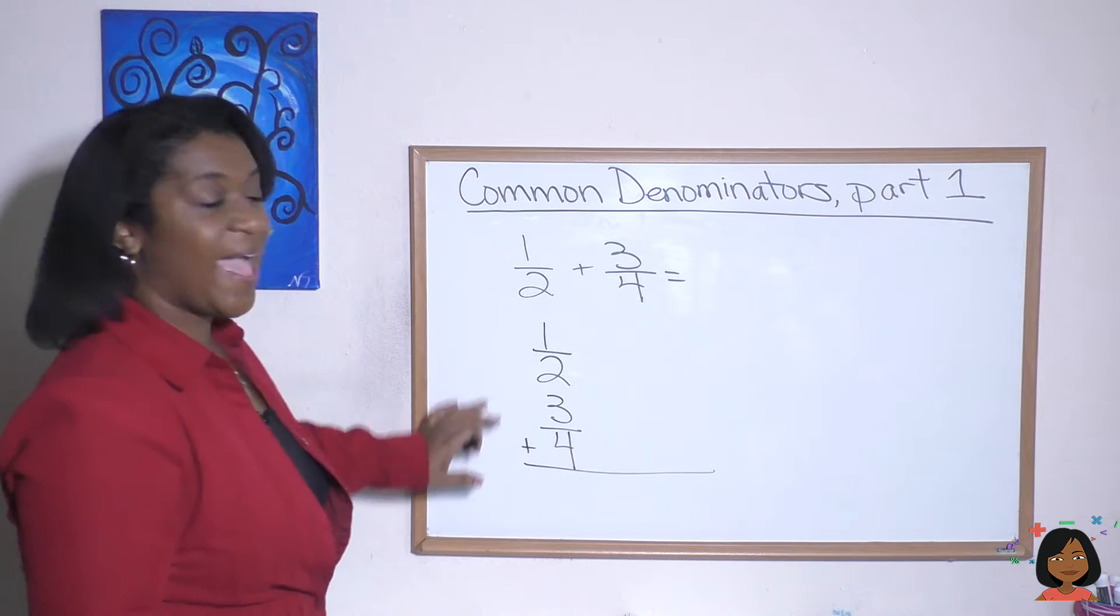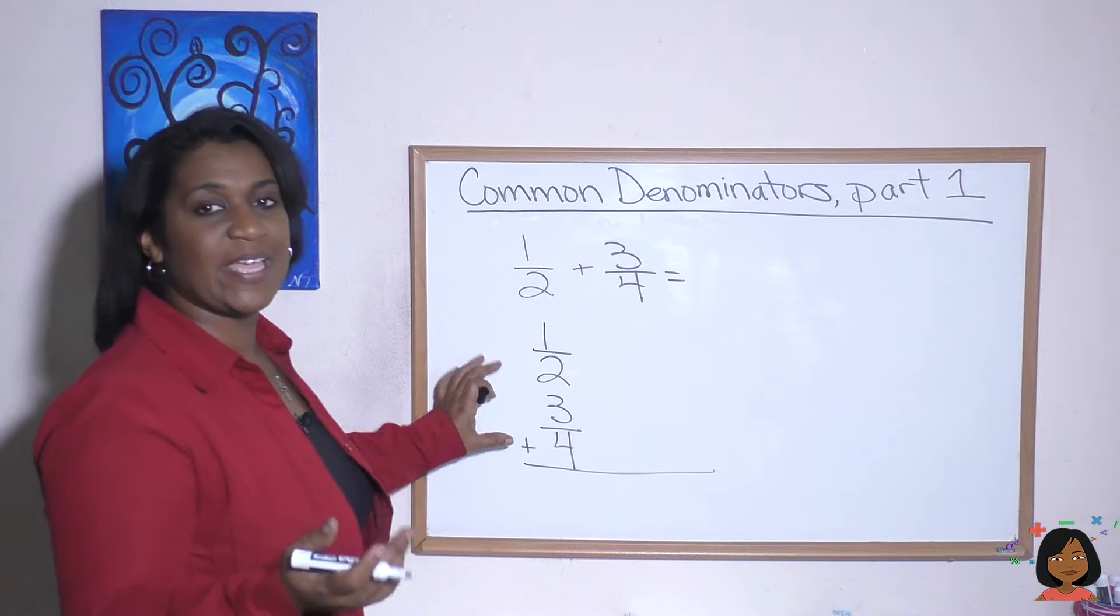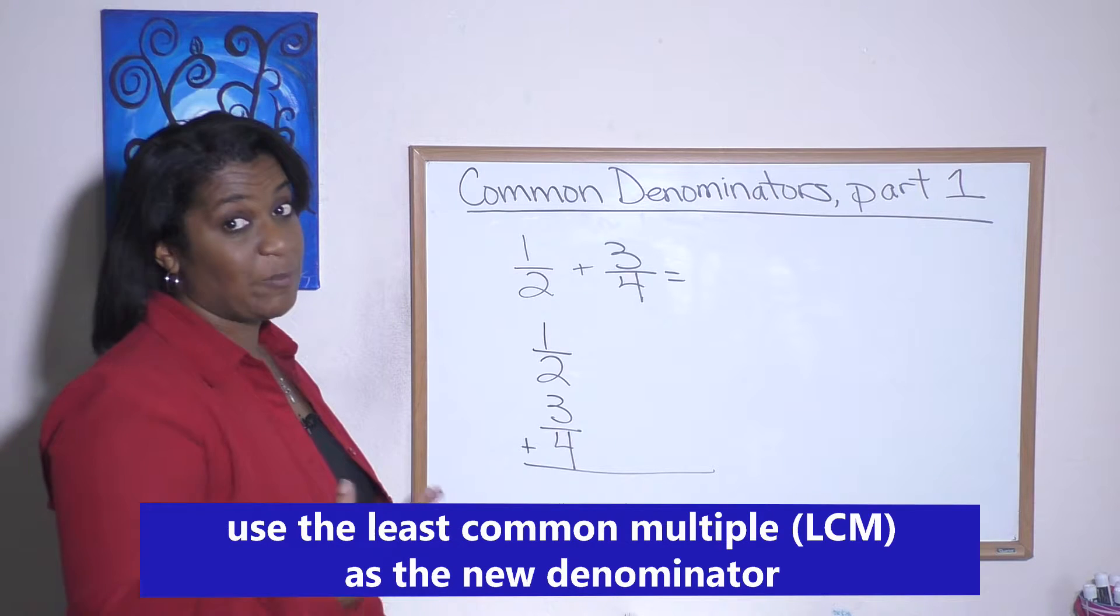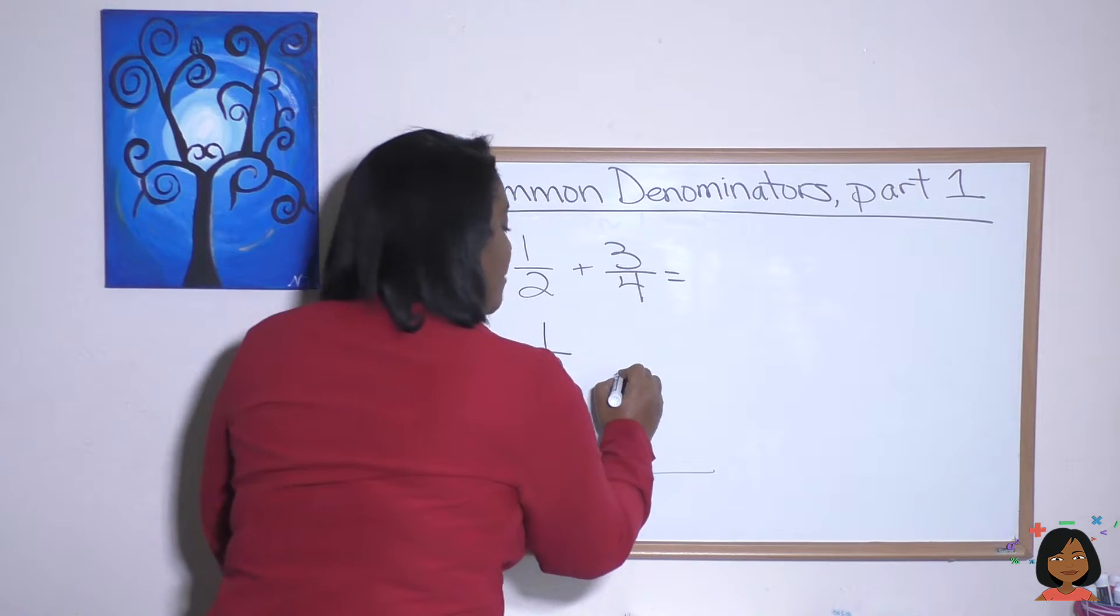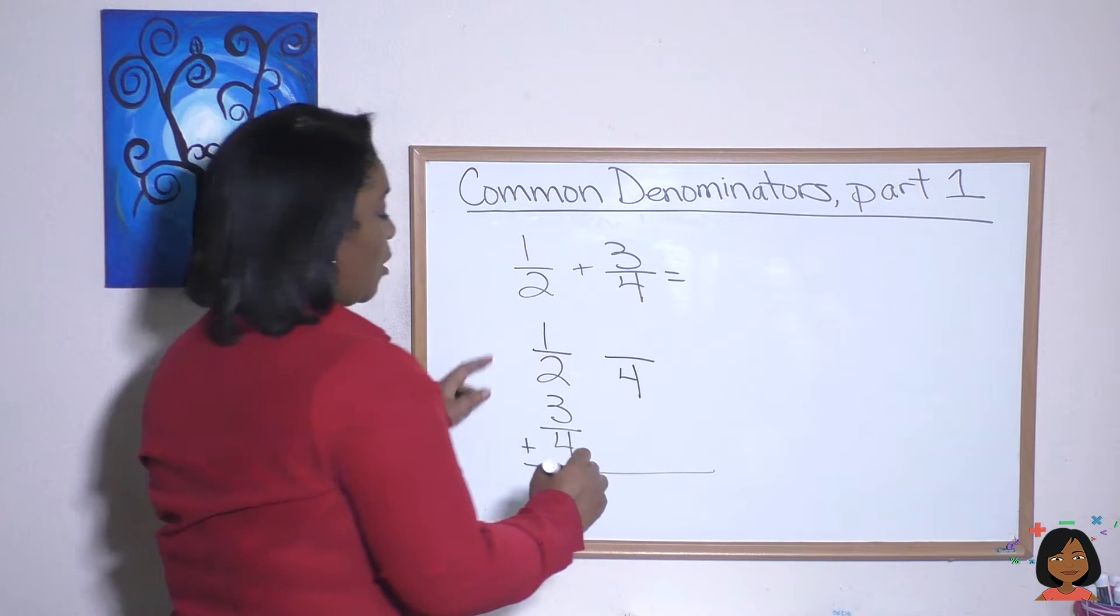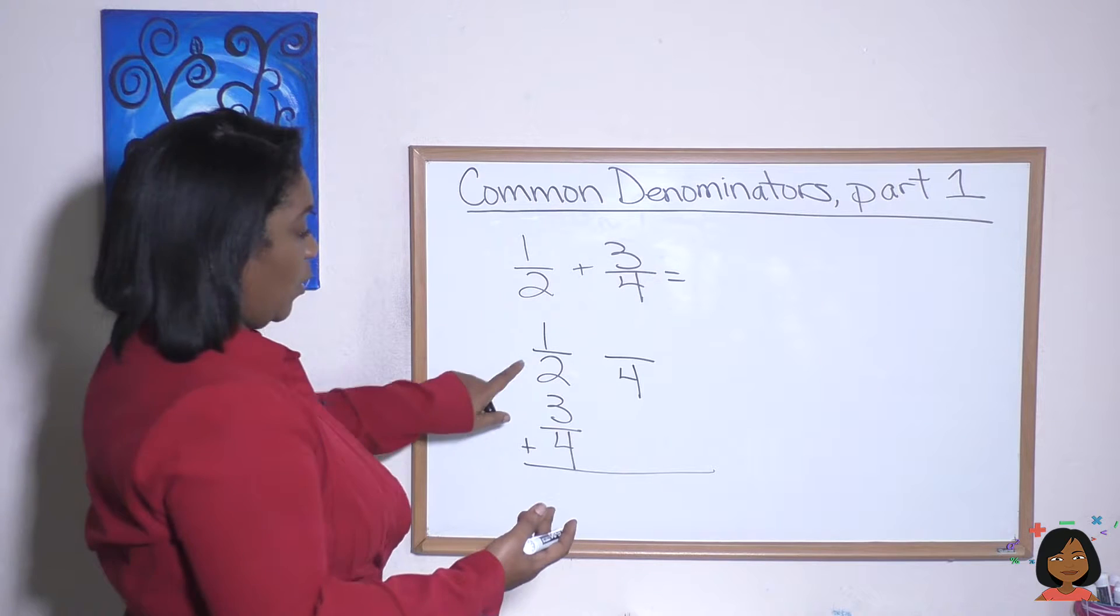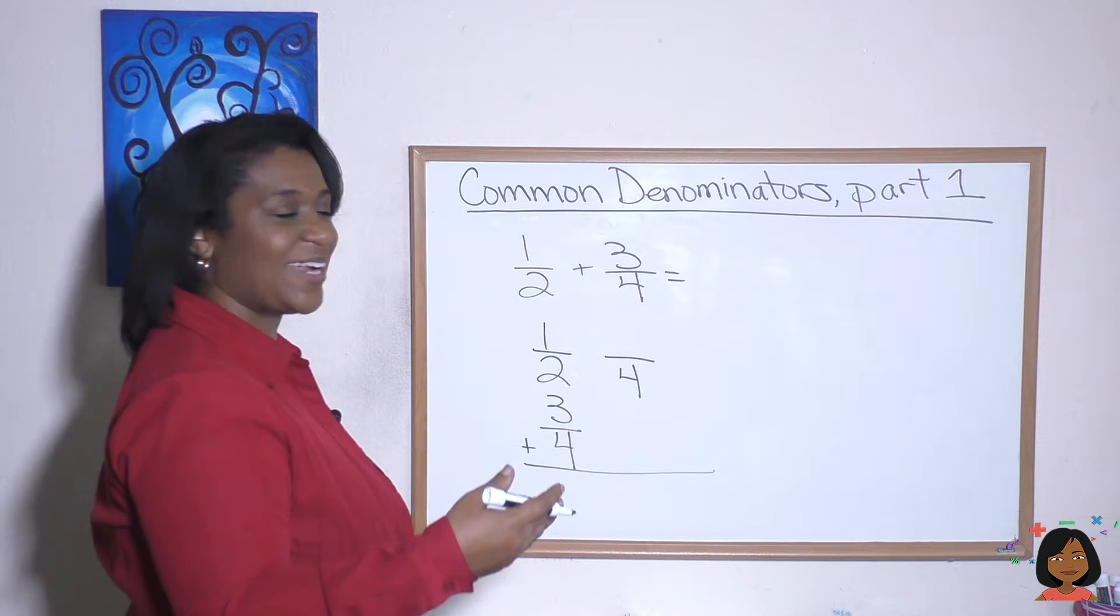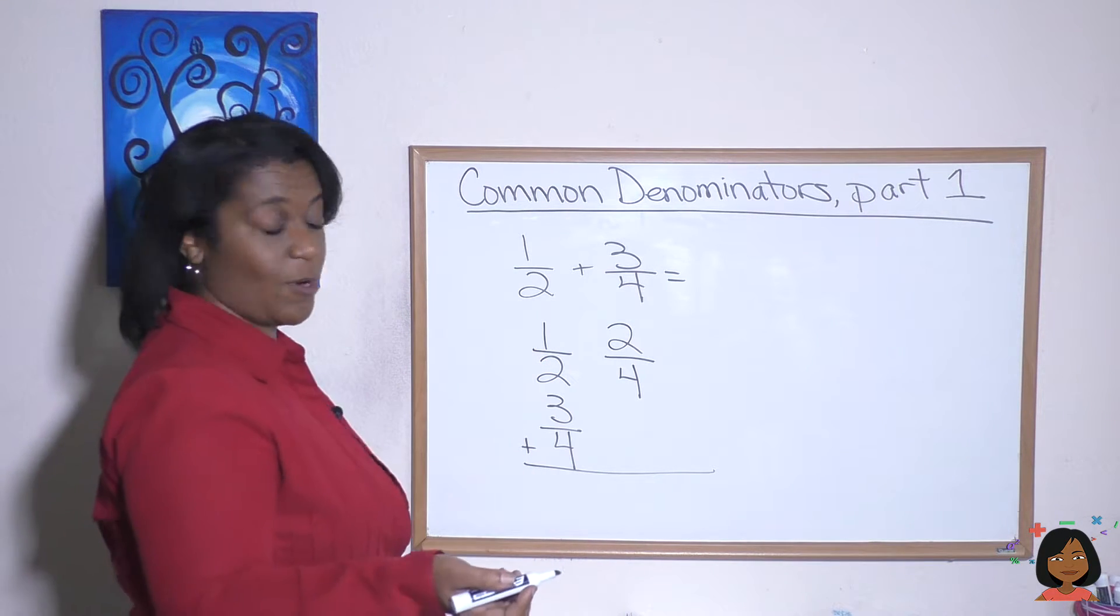One-half and three-fourths don't have the same denominator. But what is the least common multiple of two and four? That would be the number four. So that's a number that they both go into. I'm going to convert. Let's start with our one-half to a denominator with a four. We know that two times two is four. What you do to the bottom, you got to do the top. So one times two is two. One-half equals two-fourths.